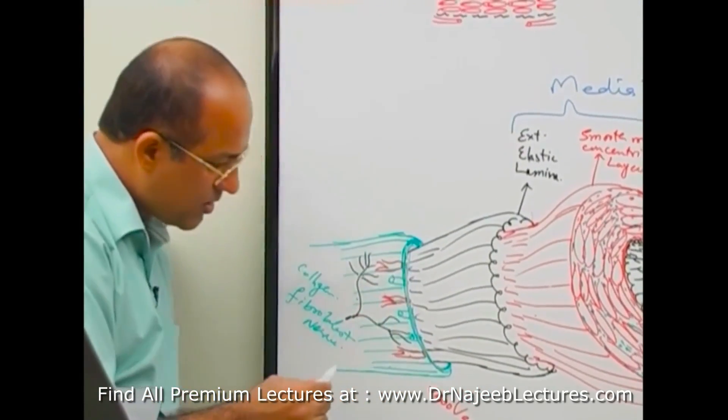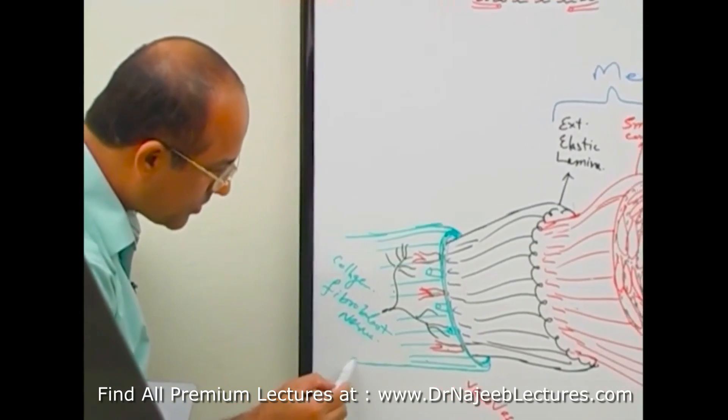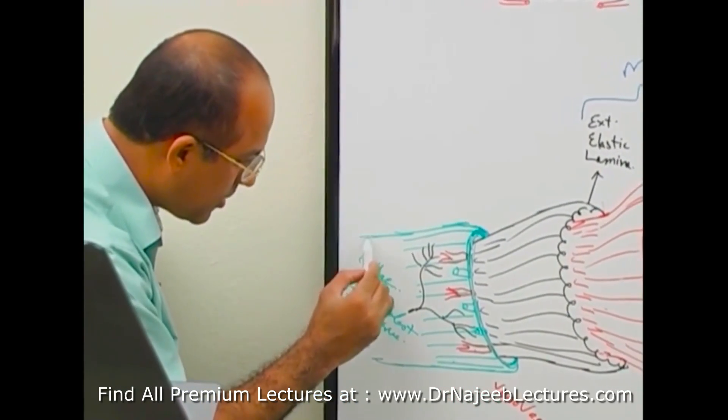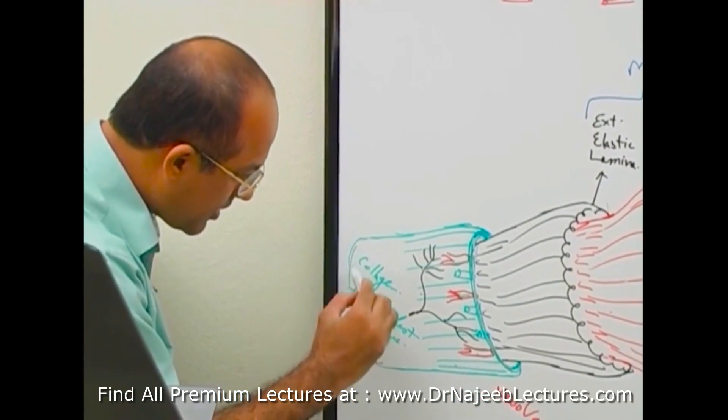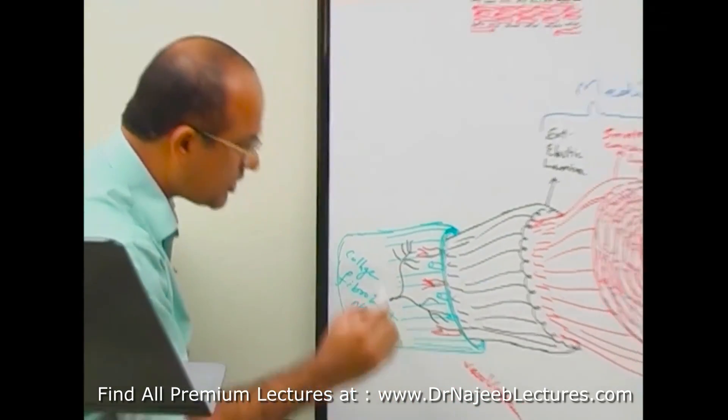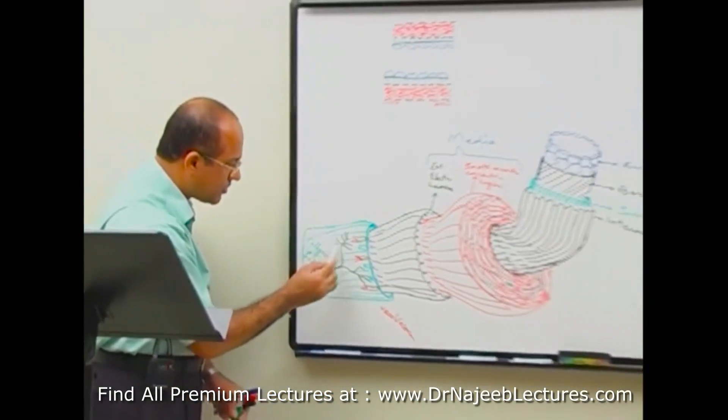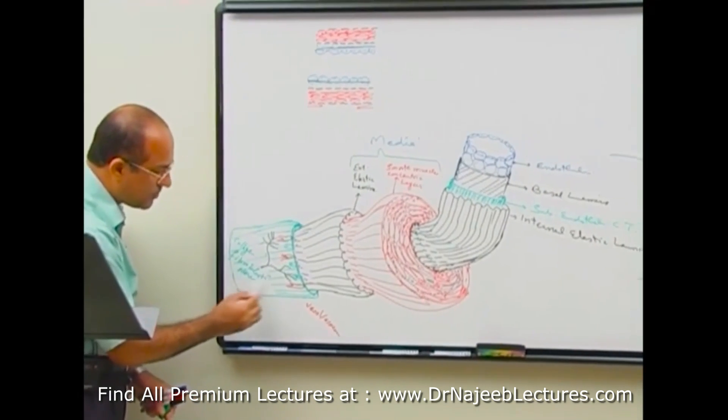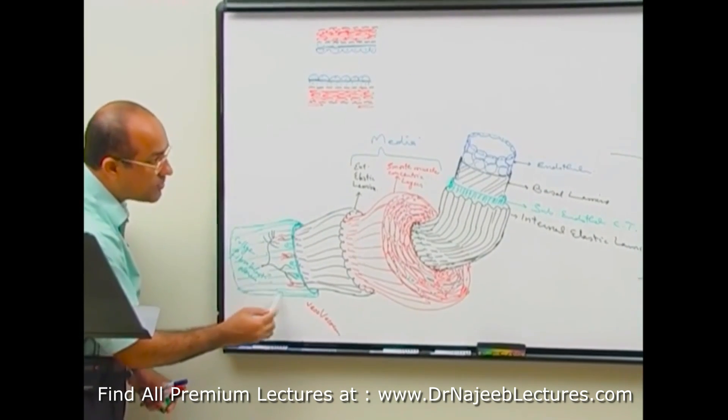The entire outermost covering is called the adventitia. That is the structure of an artery.